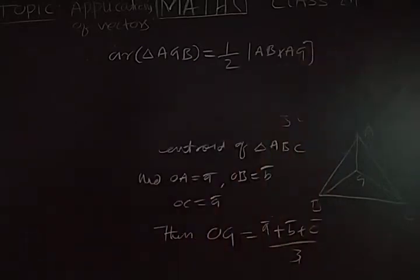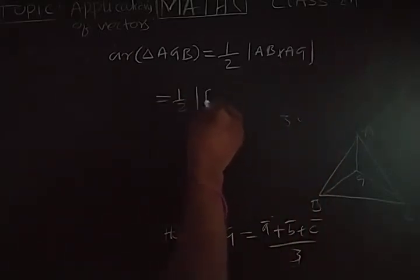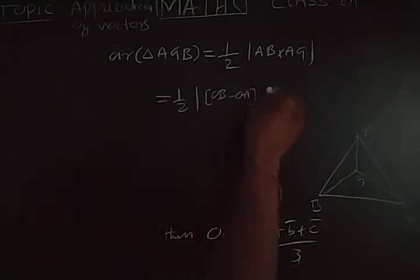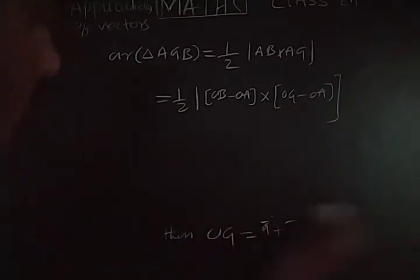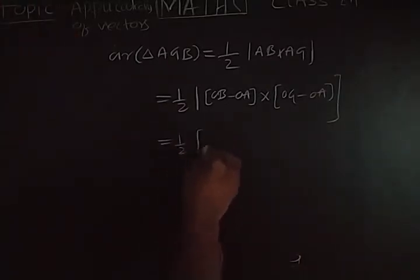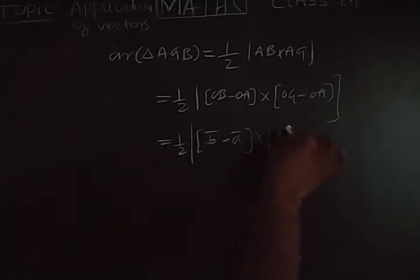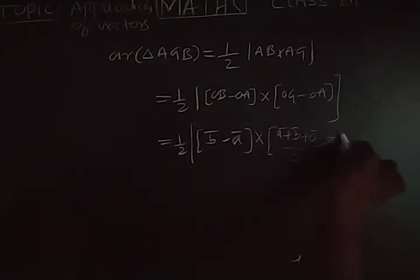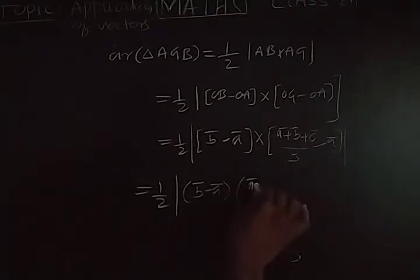Area of triangle AGB equals half mod (AB cross AG). AB can be written as OB minus OA, and AG can be written as OG minus OA. So this equals half mod (B bar minus A bar) cross ((A bar + B bar + C bar)/3 minus A bar).